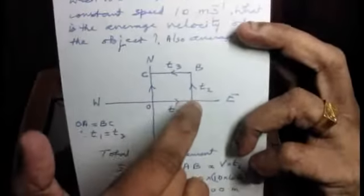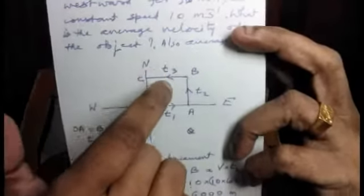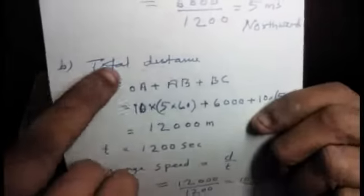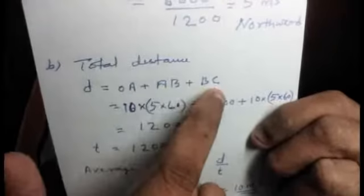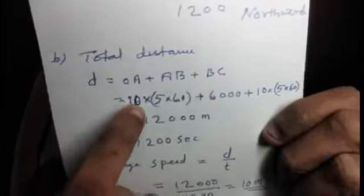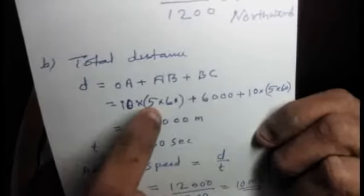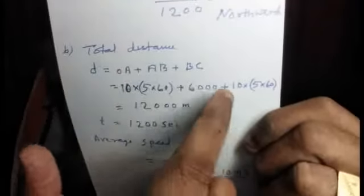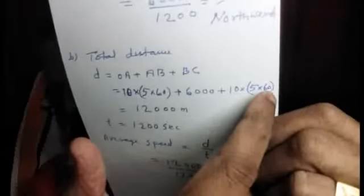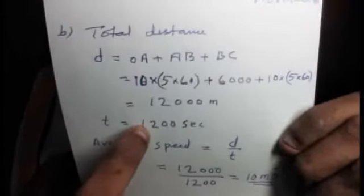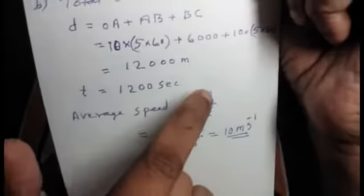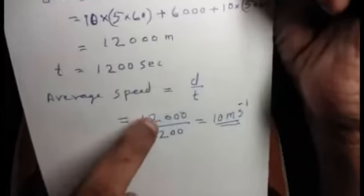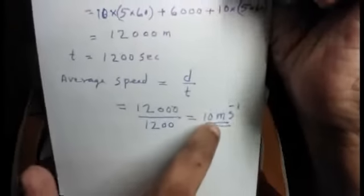For part B, average speed equals total distance by total time. Total distance D equals OA plus AB plus BC, which equals 10 meters per second into 5 into 60, plus 10 into 60, plus 5 into 60, that is 12000 meters. Average speed equals 12000 by 1200, which is 10 meters per second.